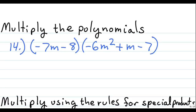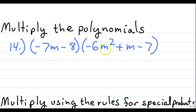Here we have a binomial, meaning two terms, multiplied by a trinomial, meaning three terms. What we're going to do is take the first term in the binomial and distribute it individually to each of the individual terms in the trinomial.